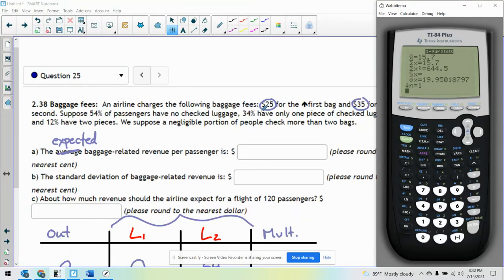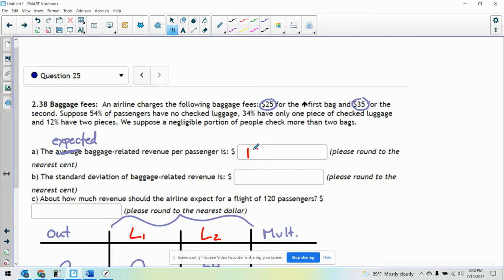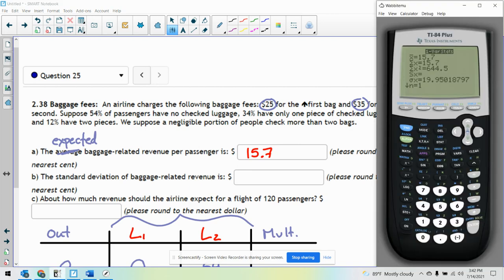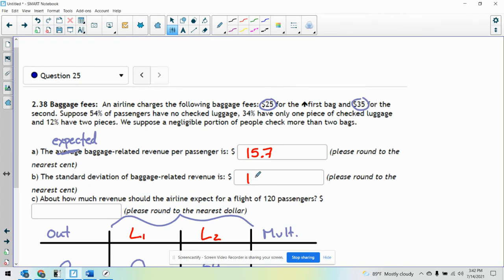So the first thing I want is the average. That's X bar. That's 15.7. The standard deviation, there is no sample standard deviation, there's just the population standard deviation. So this says nearest cent, so this is 19.95.